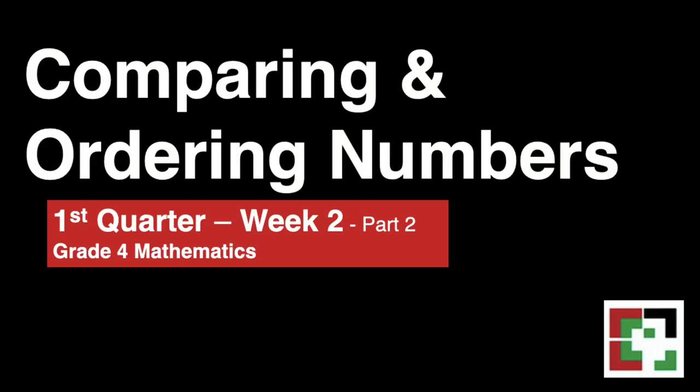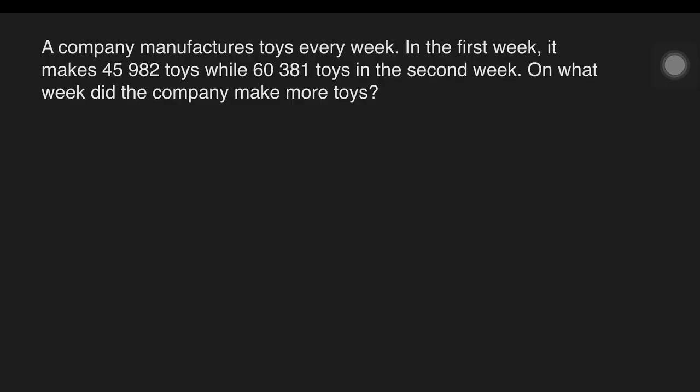This video is all about comparing and ordering numbers. We have a problem here. A company manufactures toys every week. In the first week, it makes 45,982 toys, while 60,381 toys in the second week. On what week did the company make more toys?